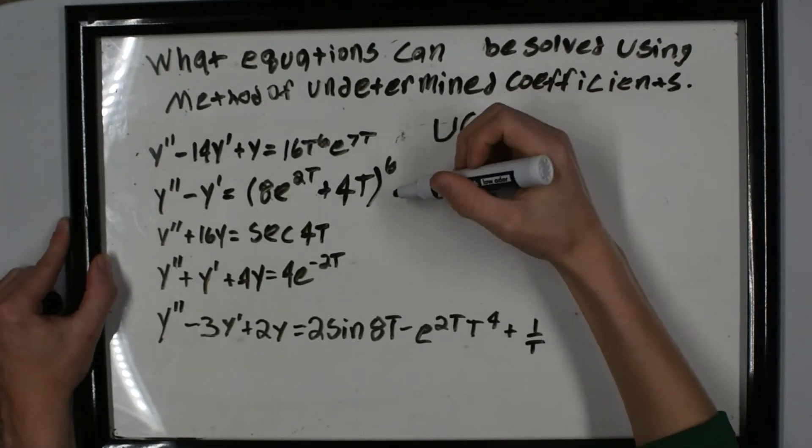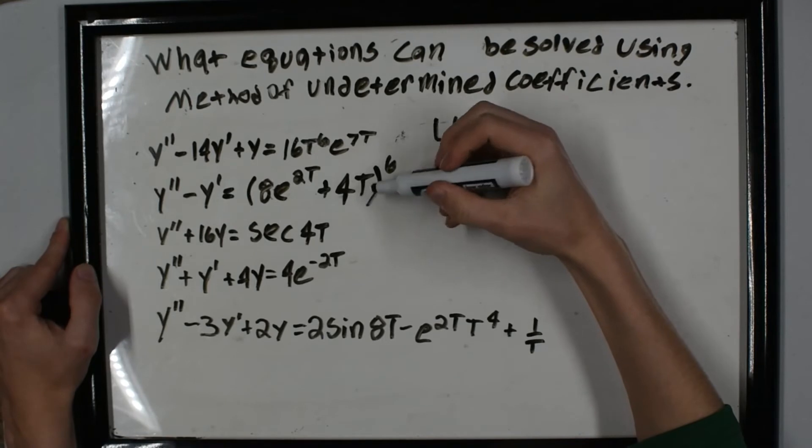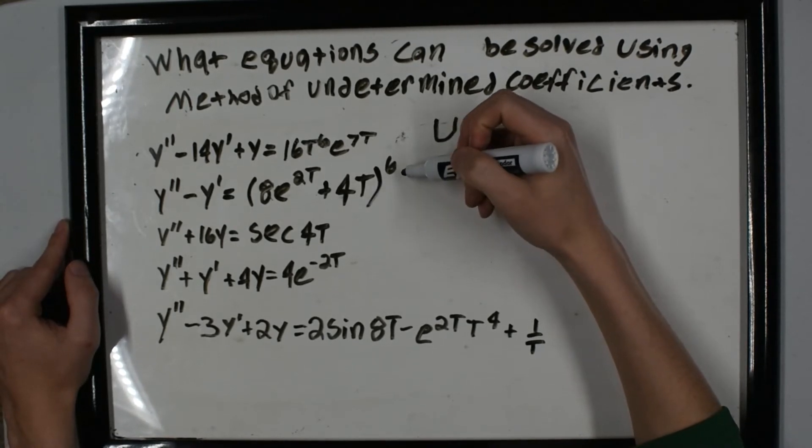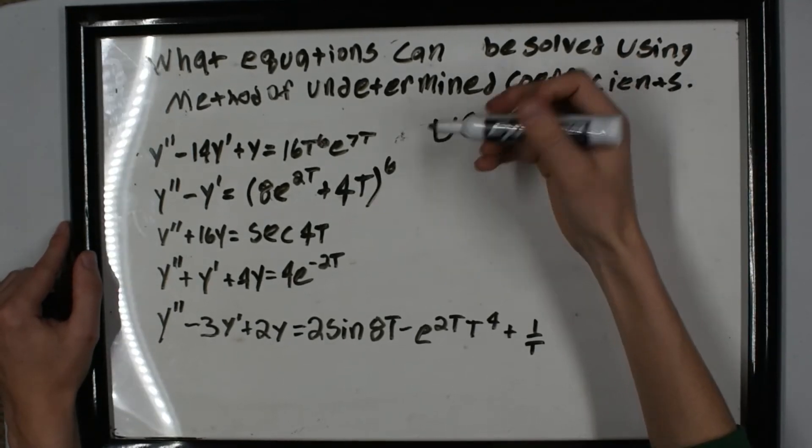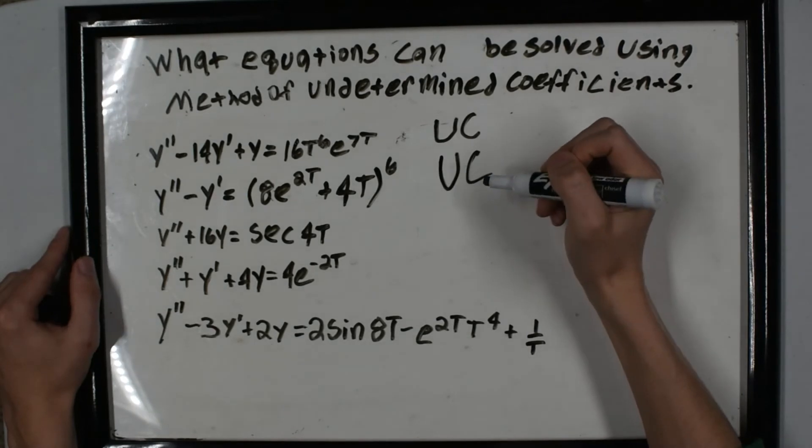How about this one? We have e's and t's, but it's to the sixth power. What we'd have to do here is expand this to the sixth power, then use the method of undetermined coefficients. So that applies too.